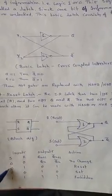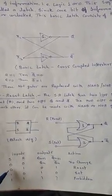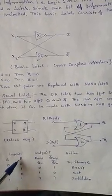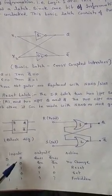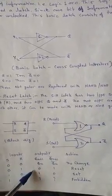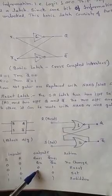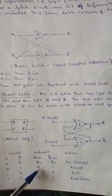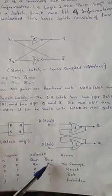Now input is taken as 01, S is 0 and R is 1. R is 1, R is the reset input, so the output Q becomes 0. It means it is reset. Q bar is set and becomes 1.